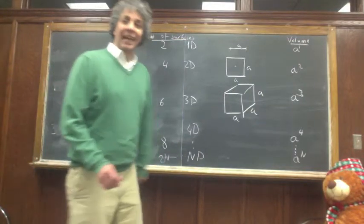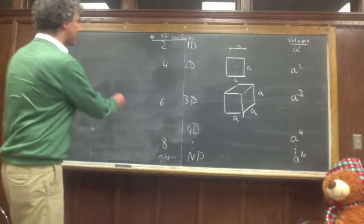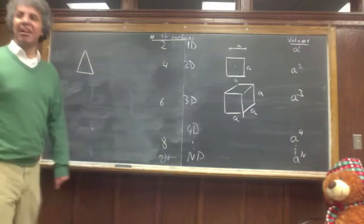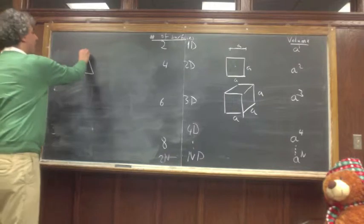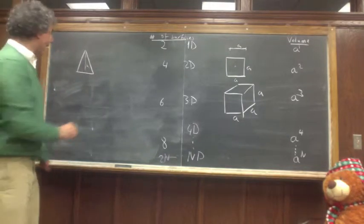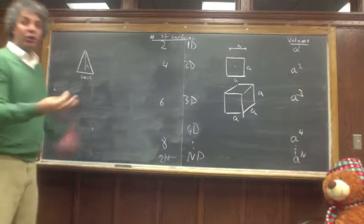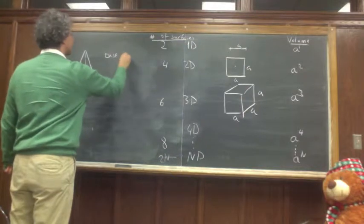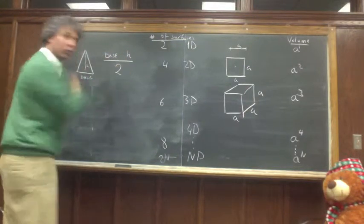Now, let's start. I guess this time I'm going to start with two dimensions. So the object we're going to do is going to be a triangle. This triangle will have a height and will have a base. So the volume, in this case the area, will be base times height divided by two.